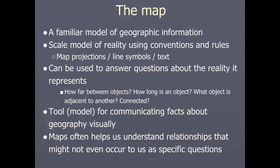We have a common starting point for understanding the information on a map. Some of these common conventions and rules include how coordinates are stored — related to map projections — how we symbolize lines and polygons, how we apply text to the map, and many other conventions. A map can be used to answer questions about the reality it represents, and that's one of the biggest powers of a map. You can answer questions like how far the distance is between two objects, or how long a particular trail is. You can also see what objects are adjacent to or connected to another. We use maps for this kind of analysis all the time.